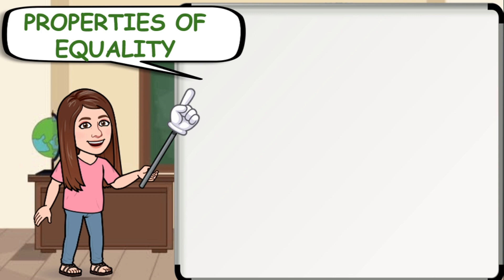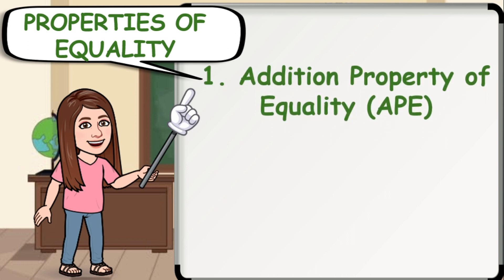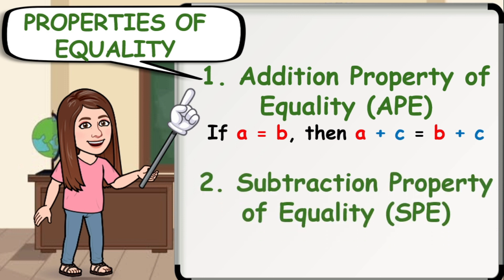To solve addition and subtraction on linear equations in one variable, you must use the following properties of equality. Number 1: Addition Property of Equality or APE, which states that if a is equal to b, then a plus c is equal to b plus c. Note that addition and subtraction are inverse operations of each other. For example, if you have a number that is being added and you need to move it to the other side, you will subtract it from both sides of the equation.